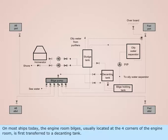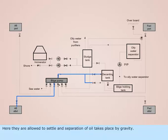On most ships today, the engine room bilges, usually located at the four corners of the engine room, are first transferred to a decanting tank. Here, they are allowed to settle and separation of oil takes place by gravity. The tank is also provided with steam heating as heating assists separation.